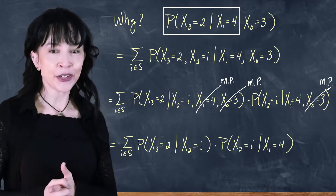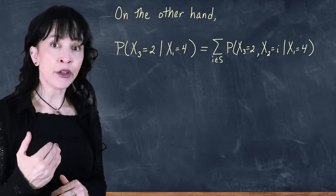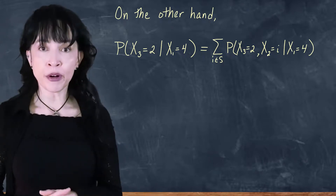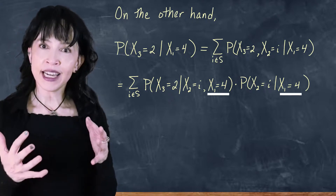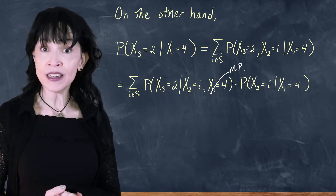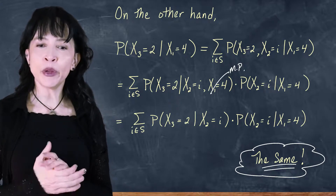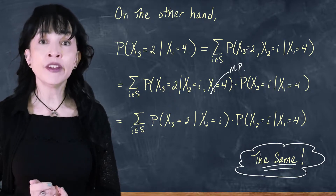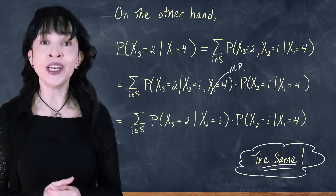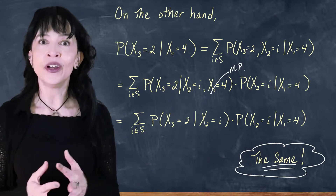Let's look at the smaller conditional probability that x3 equals two, given x1 equals four. I'm going to do the same thing — bring in the value of x2, let it be i, and sum over all i in the state space. Then I write this intersection probability as a conditional times a marginal while living in the conditional land where x1 is always equal to four. By the Markov property, I get to drop the earlier term. Now we have the exact same expression that we had on the previous side. So we have shown that the two conditional probabilities are equal.